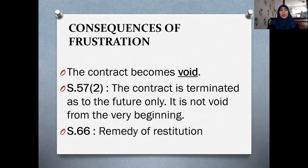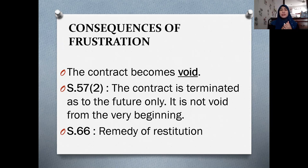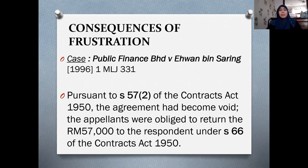The last part of the discussion covers the consequences of frustration — what happens to a contract once the court allows the doctrine of frustration to apply. The contract becomes void from that point in time onwards; it is not void from the very beginning. Under Section 57(2) of the Contracts Act, the contract is terminated as to the future only. The remedy is restitution — the court will order restoration of the parties to their earlier position wherever possible. In the Public Finance case, the court applied Section 57(2) and ordered the appellants to return the payment of RM57,000.